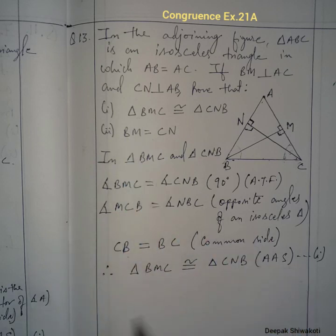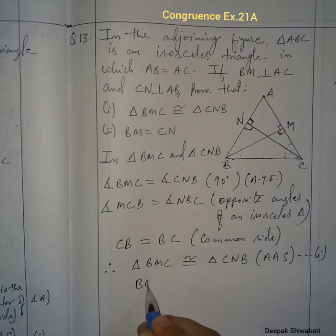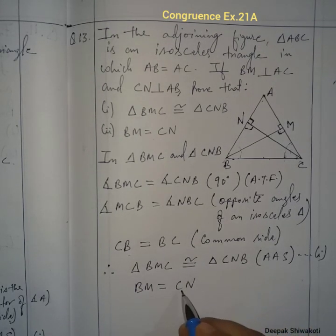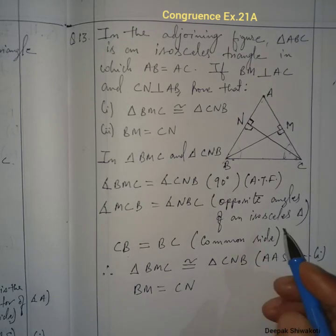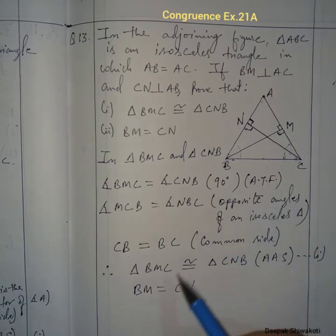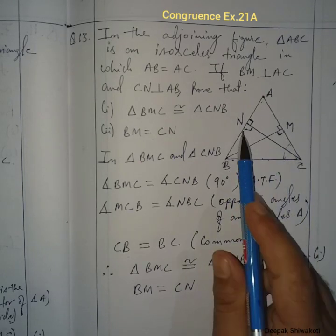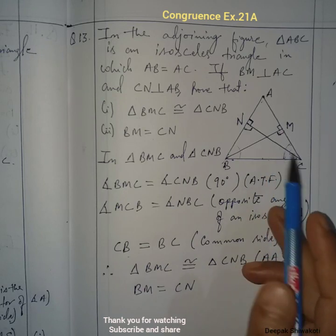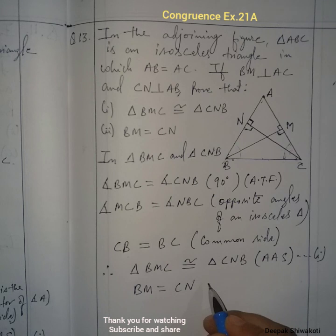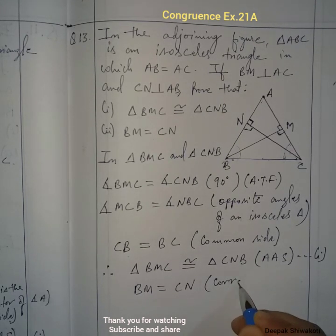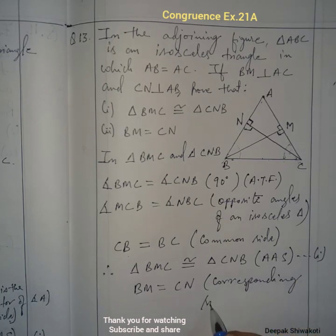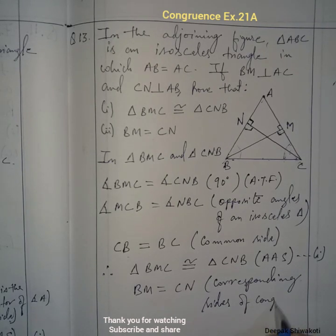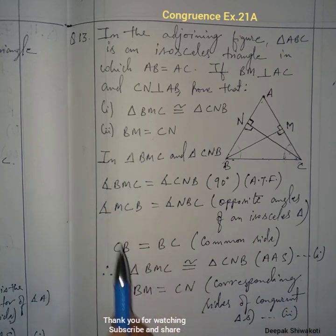That is number one, which we had to prove. For number two, BM equals CN because they are corresponding sides of congruent triangles. So BM and CN are corresponding sides and therefore equal. This completes Question 13 and the chapter on Congruency.